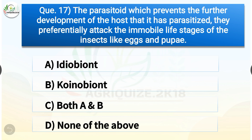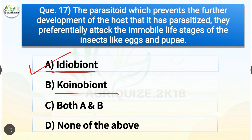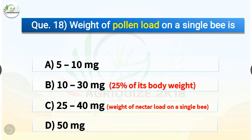Question number seventeen: The parasitoid which prevents the further development of the host — they preferentially attack the immobile life stages of insects like eggs and pupae — is called what? The options are: idiobiont, koinobiont, both A and B, or none of the above. The correct answer is option A — idiobiont. In the case of koinobiont, these parasitoids allow the growth and development of the host and often do not kill the host.